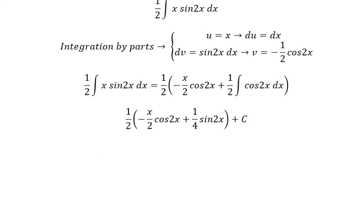The final answer is negative x over 4 cos 2x plus 1 over 8 sin 2x plus C.